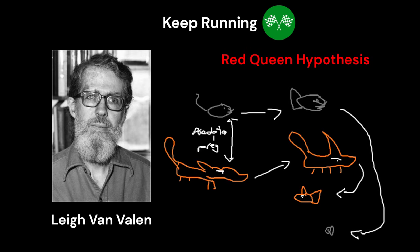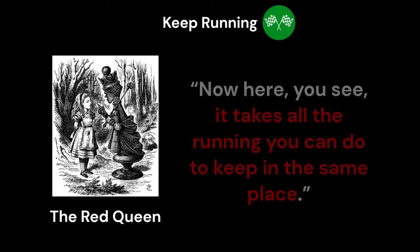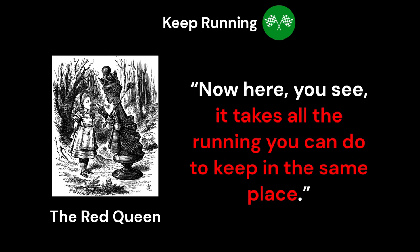The red queen hypothesis is an idea coined by evolutionary biologist Lee Van Valen. He states that there are no permanent advantages brought upon by evolution. It's a constant arms race between predator and prey. As the red queen once said, now here you see, it takes all the running you can do to keep in the same place.